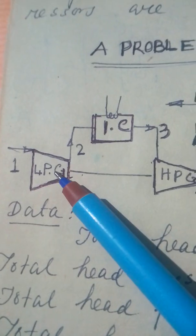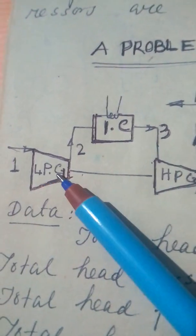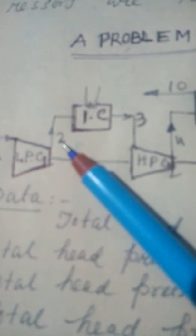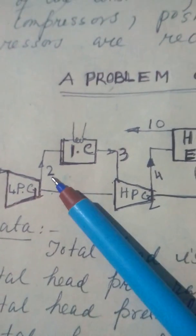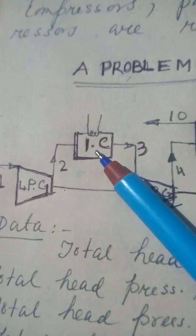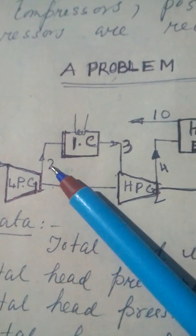Low pressure compressor 1, 1 to 2. Then, intercooler 2 to 3.